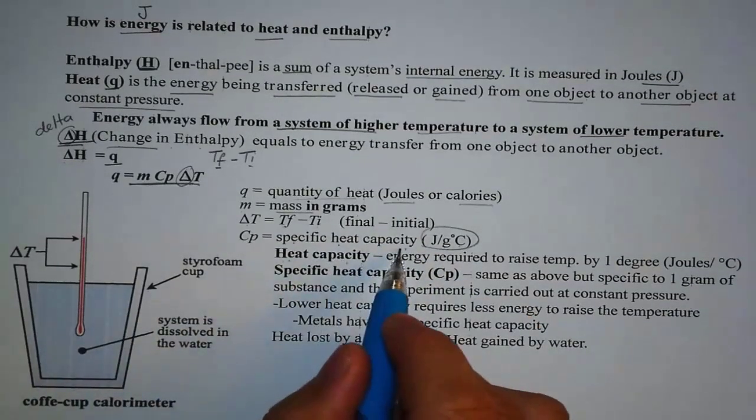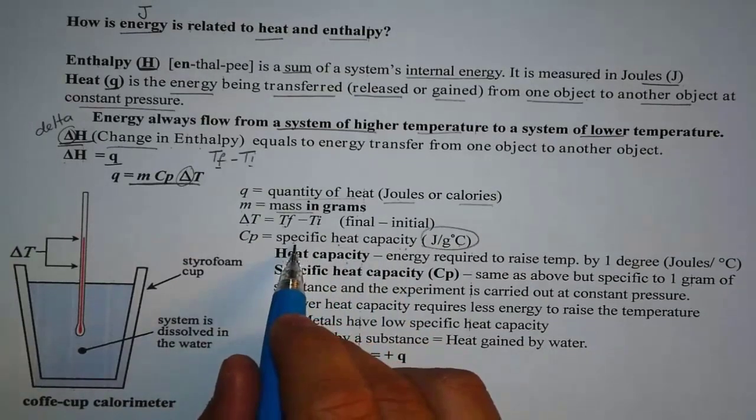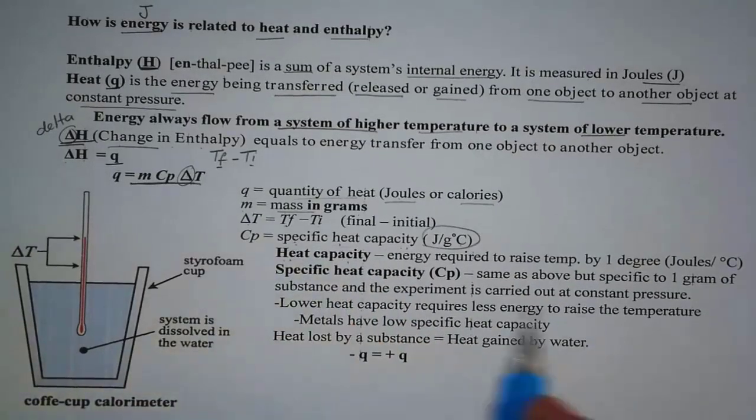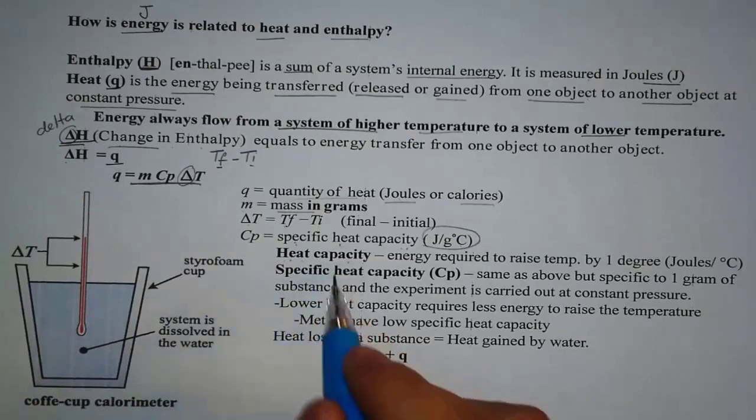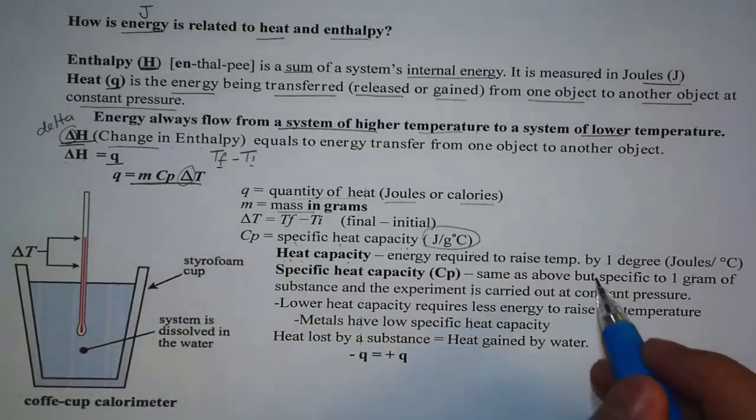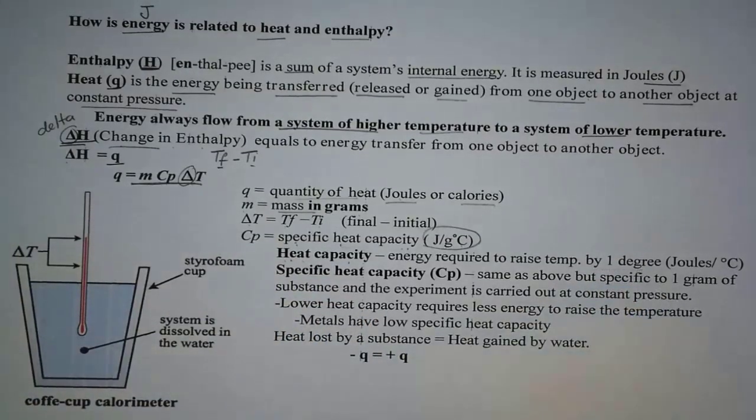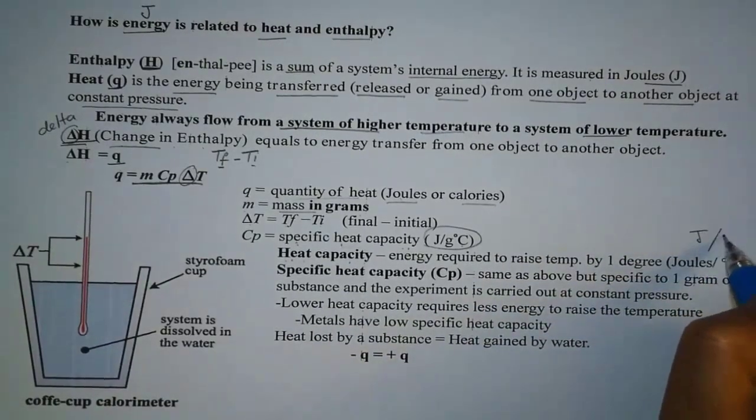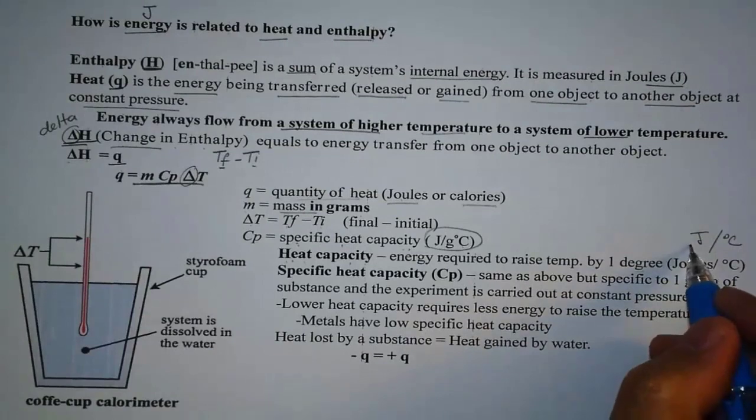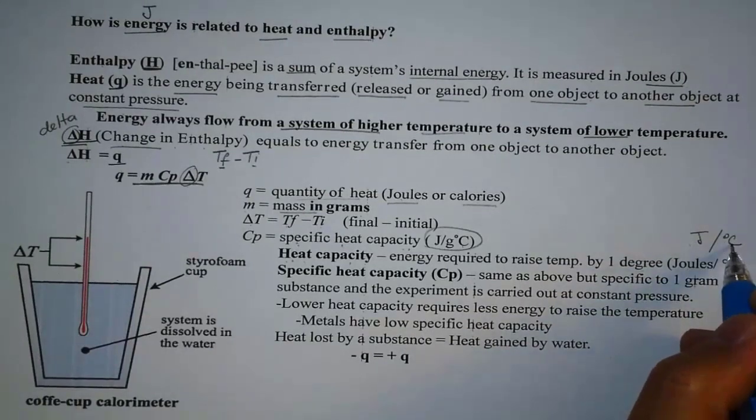So what is heat capacity and how is it different from specific heat capacity? Well, first of all, heat capacity is the energy required to raise one degree Celsius. So how much energy, that's why we have joules over Celsius. How much energy do I need to raise one degree Celsius?